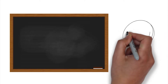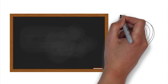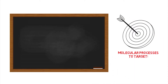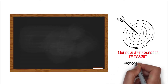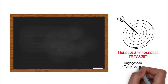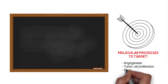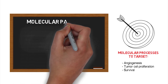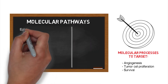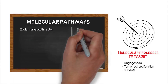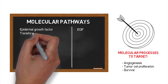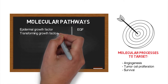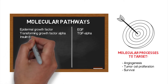These targets can best be characterized by the roles they play in key molecular processes necessary for angiogenesis, tumor cell proliferation, and survival. These pathways include the epidermal growth factor receptor, or EGF, transforming growth factor alpha, or TGF-alpha, and the insulin-like growth factors, or IGF.